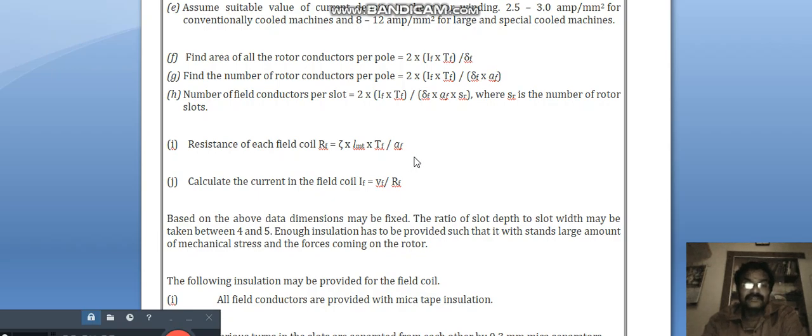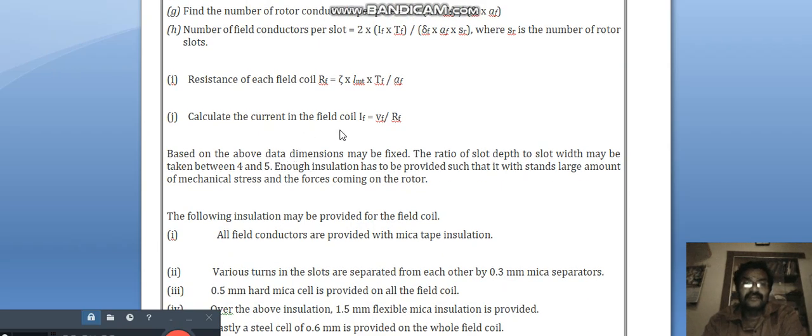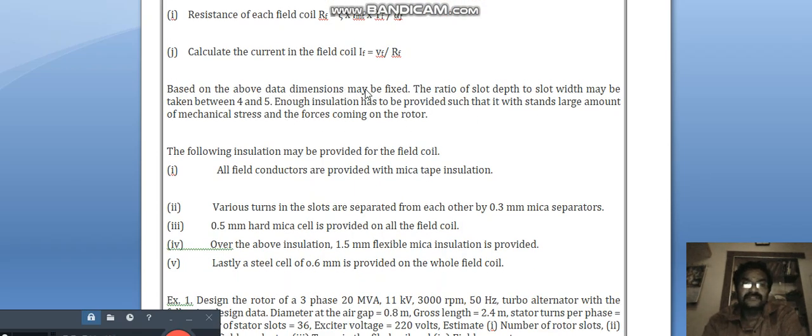Resistance of each field coil R_f is equal to ρ × LMT × T_f / δ_f × A_f. Calculate the current in the field coil I_f = V_f / R_f. Based on the above data, dimensions may be fixed. The ratio of slot depth to slot width may be taken between 4 to 5.